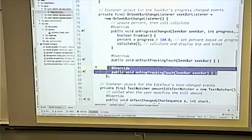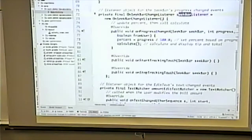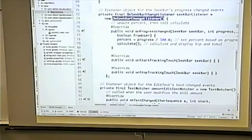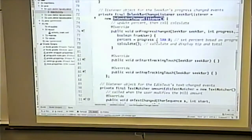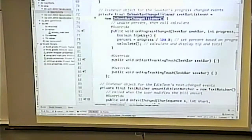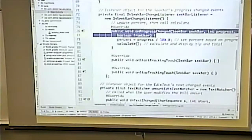We have this object called seek bar listener. What class is it? It's an anonymous class that implements this interface. These two methods aren't really used. This is the method we're interested in. Now notice this method. And remember, these are methods that exist in the Android framework.